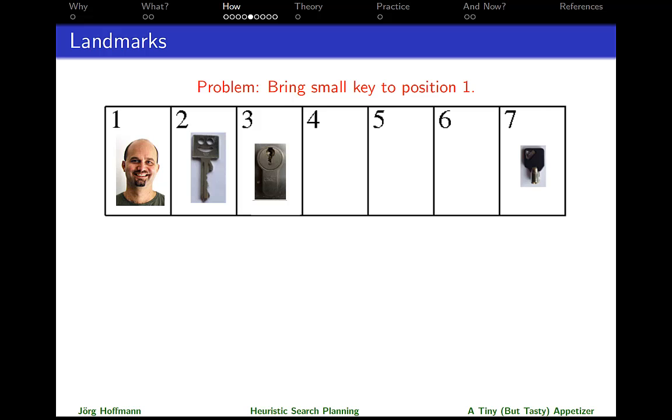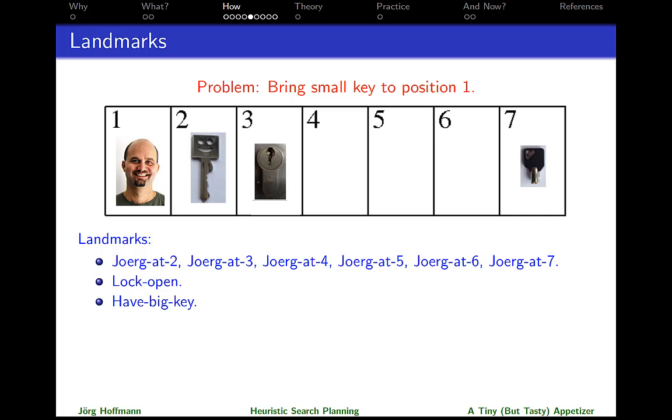Now, what is a landmark? A landmark is defined as something that has to be true at some point along any plan. In this case here, for example, at some point along any plan, I am going to be at any one of those positions simply because I got to move across the entire grid. Another thing is, as you see here, position three is locked. In order to move across that, I'm going to have to open it. So this is another landmark. Now, in order to open the lock, I need the key, which is the big key currently in position two, another landmark. Also, at some point, because I have to transport the small key at some point, I'm going to have to have it in my hand.